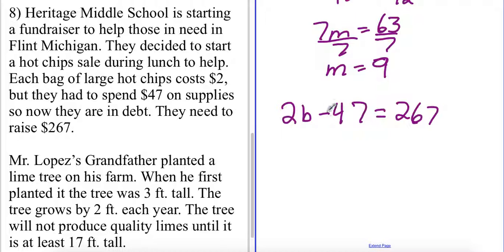Now remember when we have subtraction the only way to get rid of this constant is by adding that value. So I'm going to add 47 to both sides. My 47 will cancel out. I'll be left with 2b equaling 314.